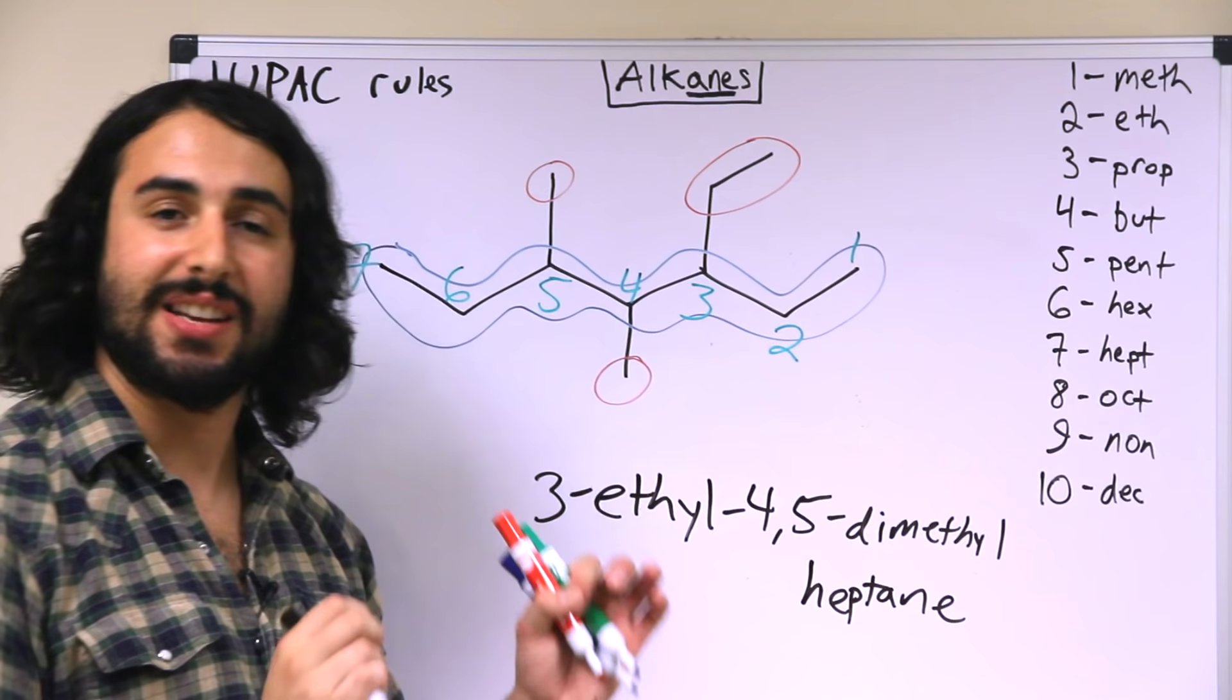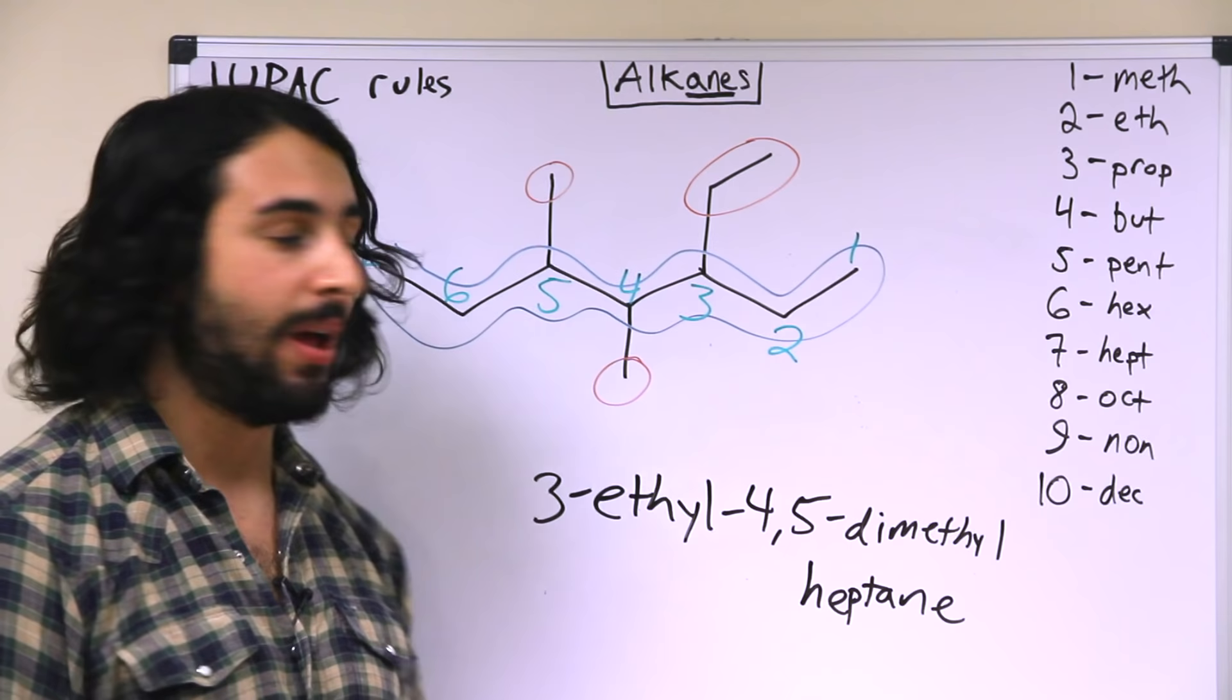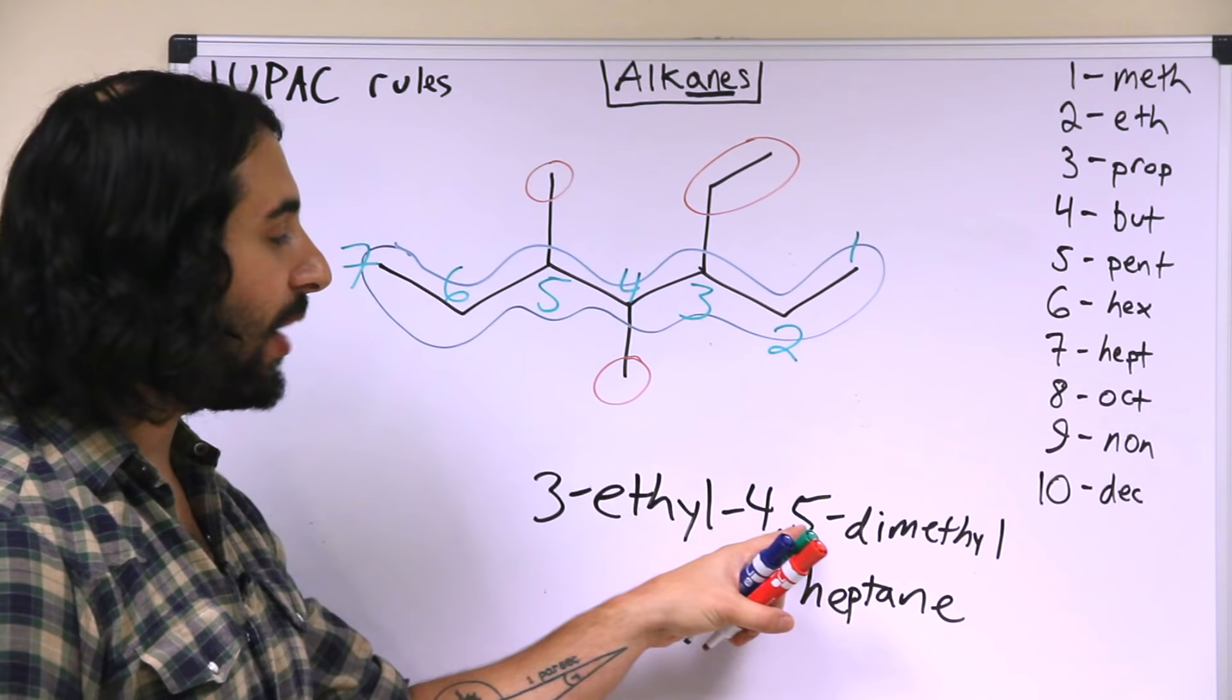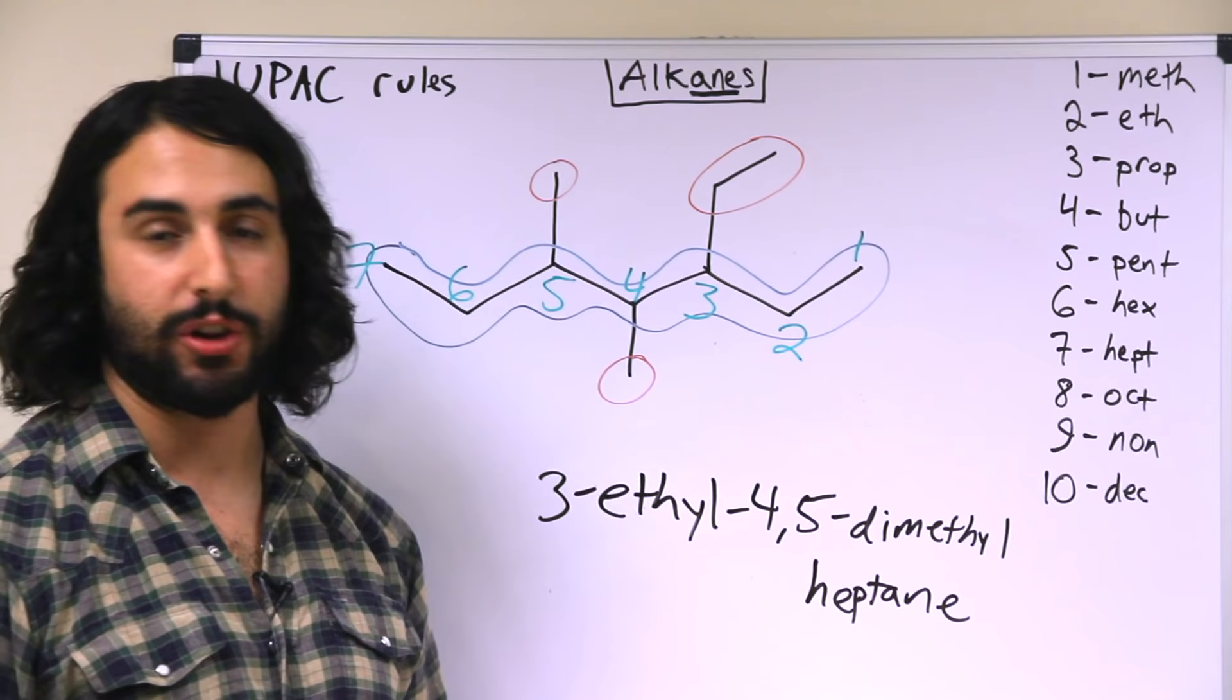So the point is that we have identified that there are two identical methyl groups, so we want to list them at the same time but with the prefix di- indicating that there are two of them, and then the numbers 4 and 5 separated by a comma indicating that they occur on carbons 4 and 5 in the molecule.